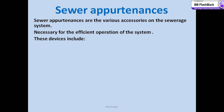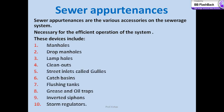These are the different devices which include manholes, drop manholes, lampholes, clean outs, street inlets which are also called gullies, catch basins, flushing tanks, grease and oil traps, inverted siphons, and storm regulators.